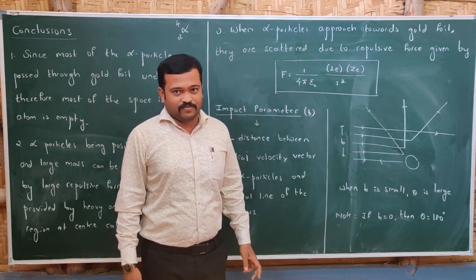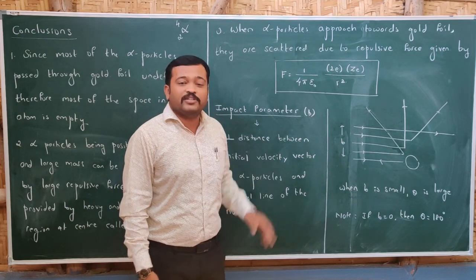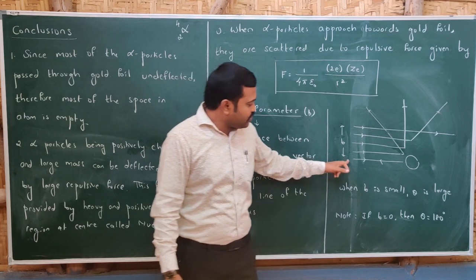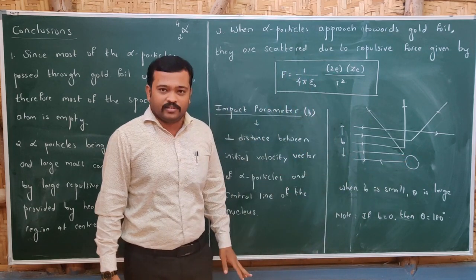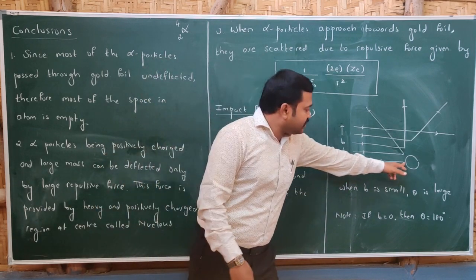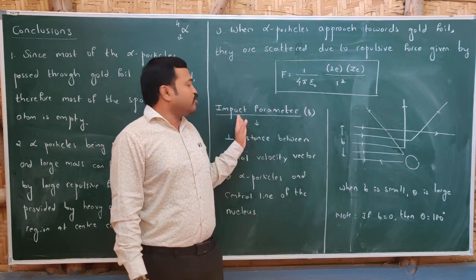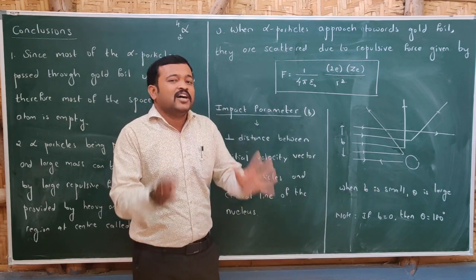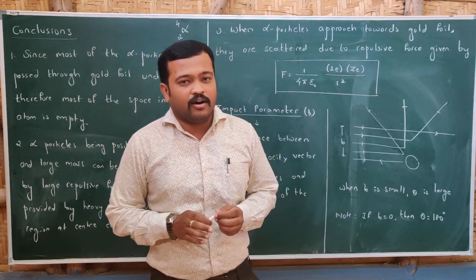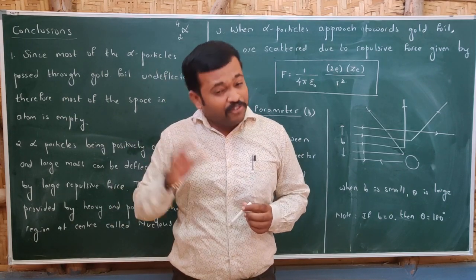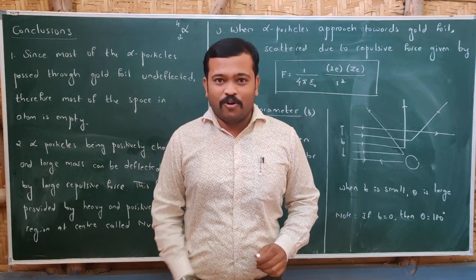The significance of the impact parameter is: as the impact parameter decreases, the angle of scattering increases. If the impact parameter becomes zero — meaning the particle moves exactly along the central line — it retraces its path, giving a scattering angle of 180 degrees. These were the conclusions of the alpha particle scattering experiment, from which Rutherford gave his model of the atom.